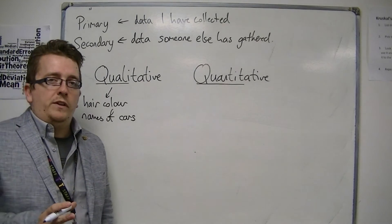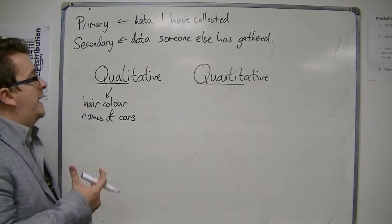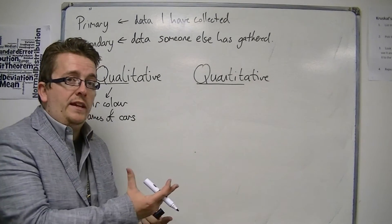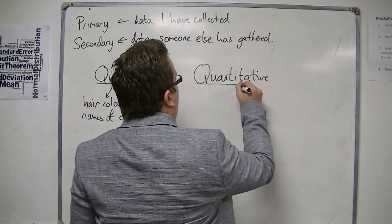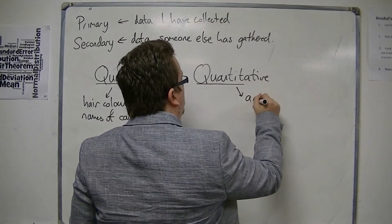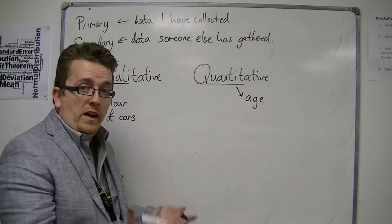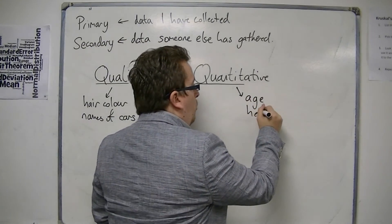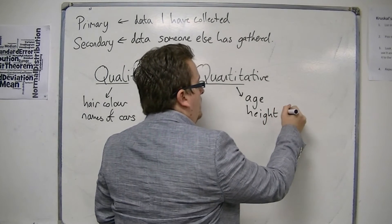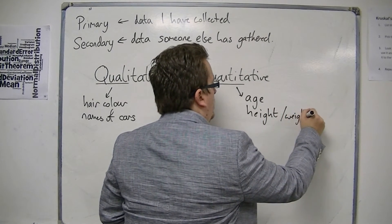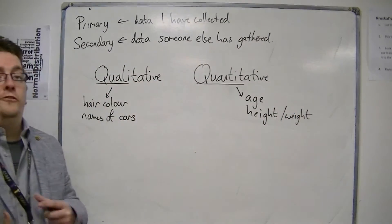Quantitative, however, you're looking at a quantity. So it might be something like age or it could be height or weight, and so on and so forth.